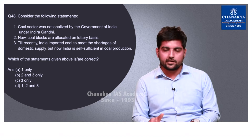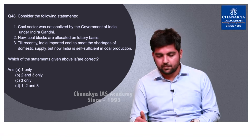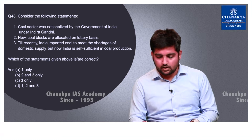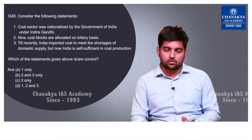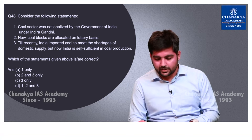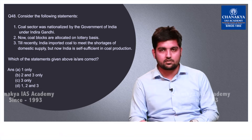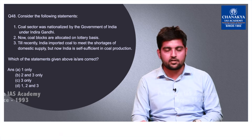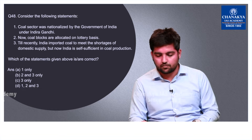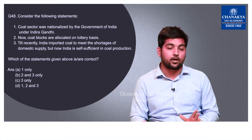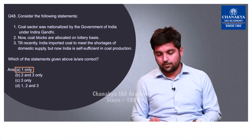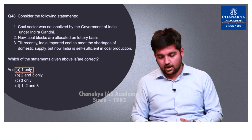Question number 48 is related to the coal sector in India — a statements-type question with three statements. The first statement — that the coal sector was nationalized by the Government of India under Indira Gandhi in 1970 — is correct. The second statement, that coal blocks are allocated on a lottery basis, is completely wrong; allocation is done through auctions. The third statement, that India is now self-sufficient in coal production, is also wrong because India still imports a large quantity of coal. So the correct option is A — 1 only.